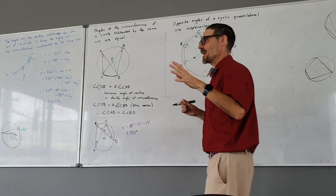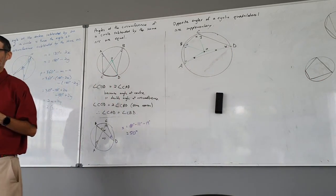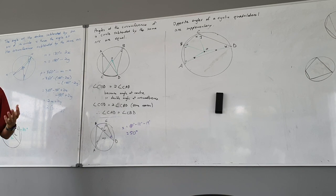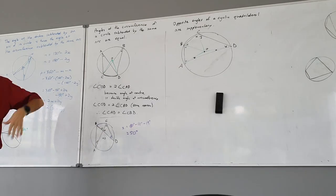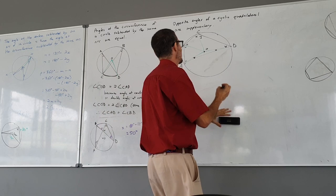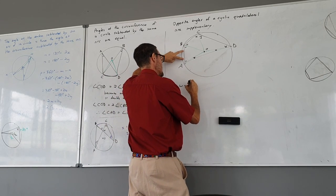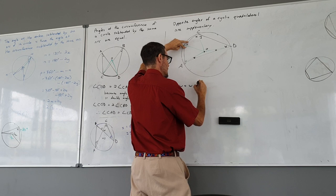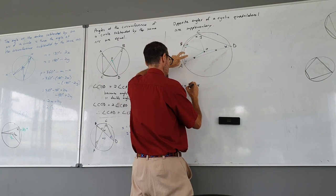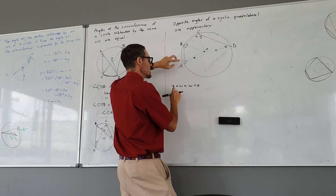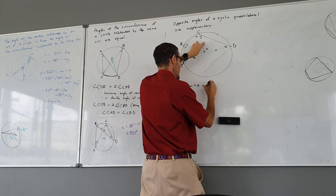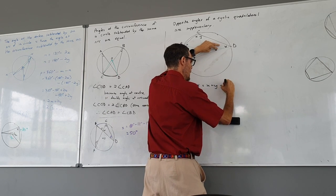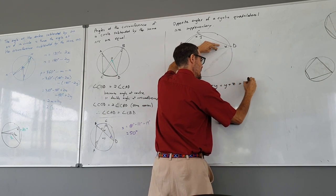What do all the angles inside a quadrilateral have to add up to? Correct. So that means W plus W plus X... I'll show that was W plus Z. Z plus W plus W plus W plus X plus X plus Y plus Y plus Y plus Z has to be 360.